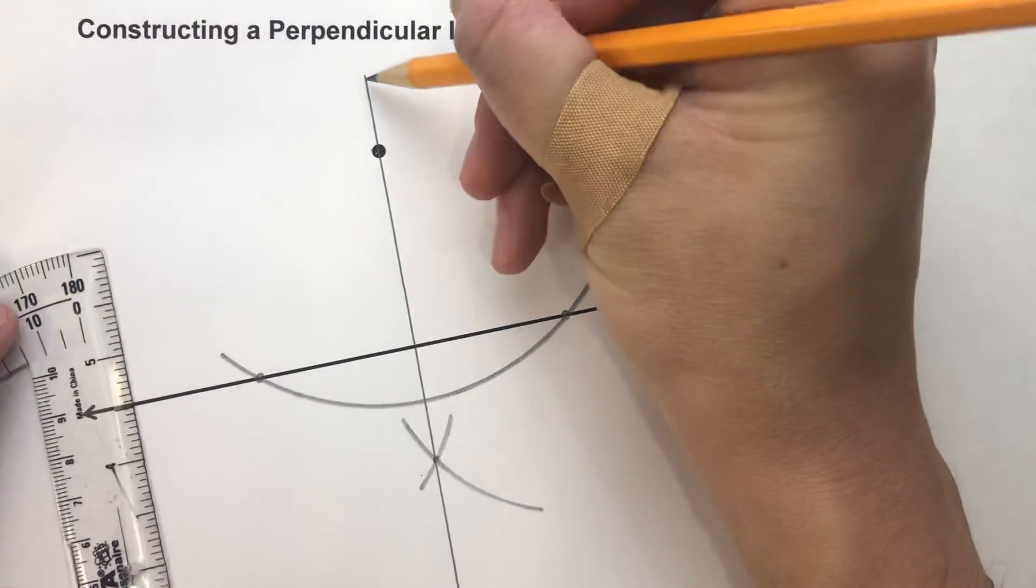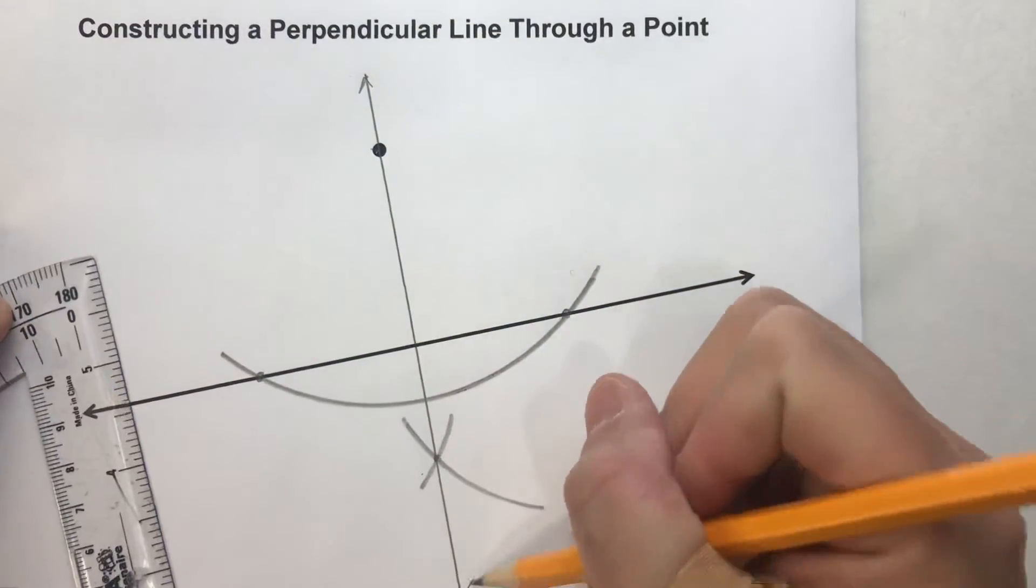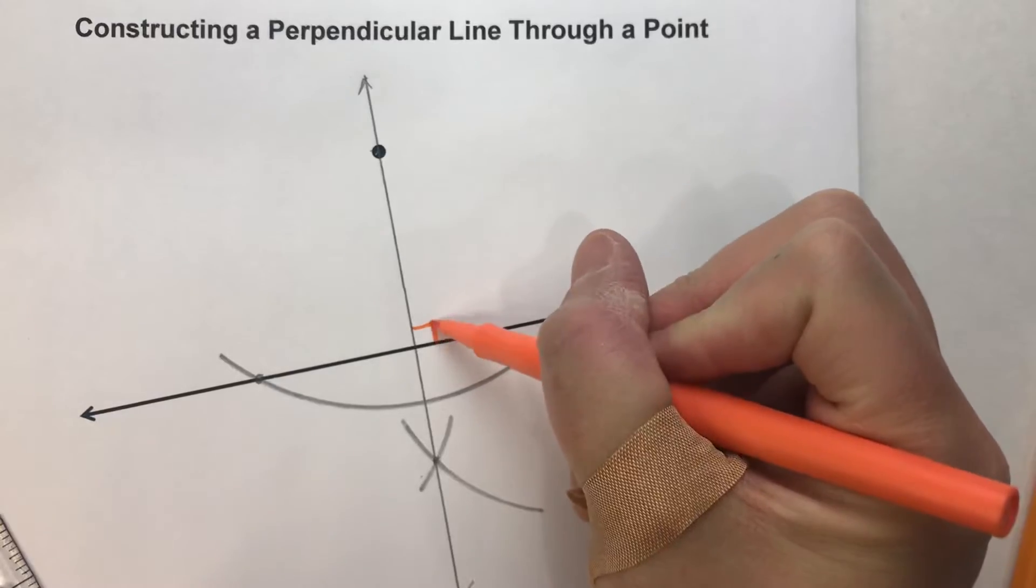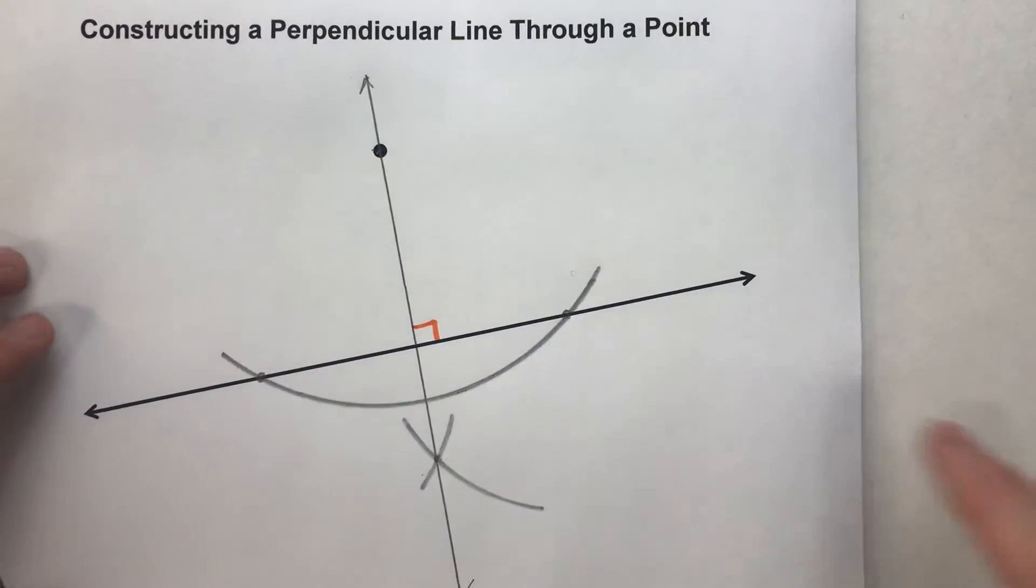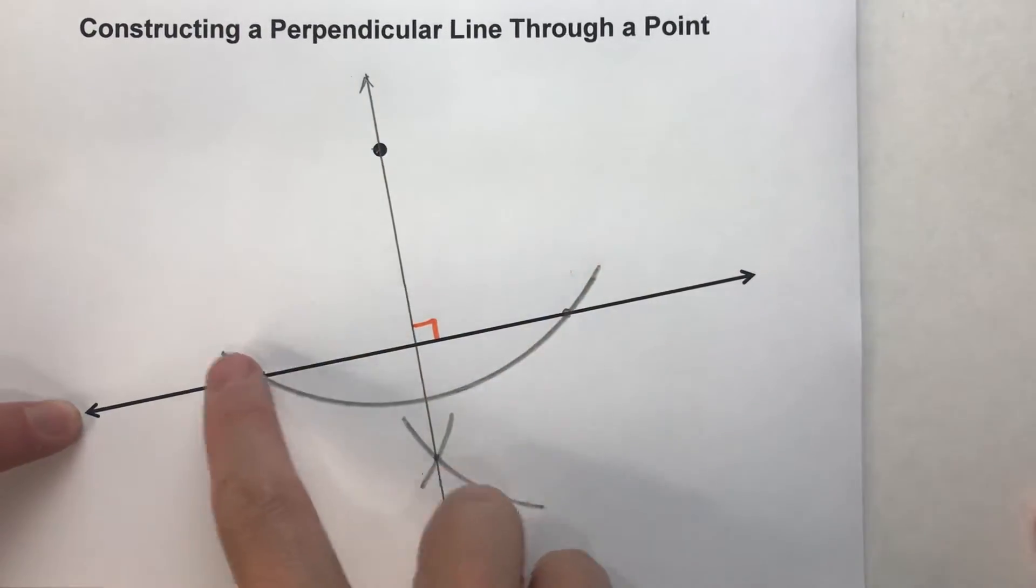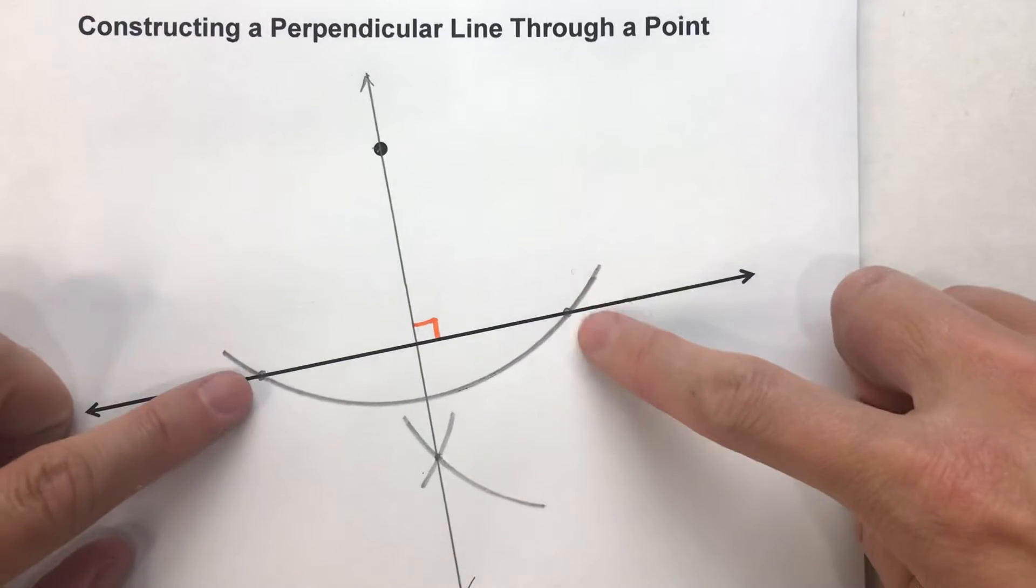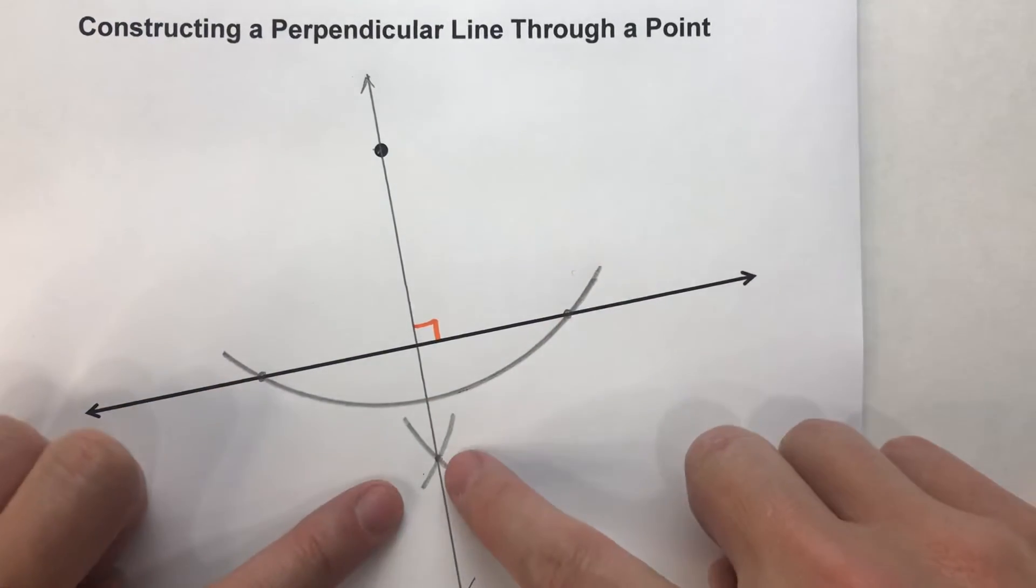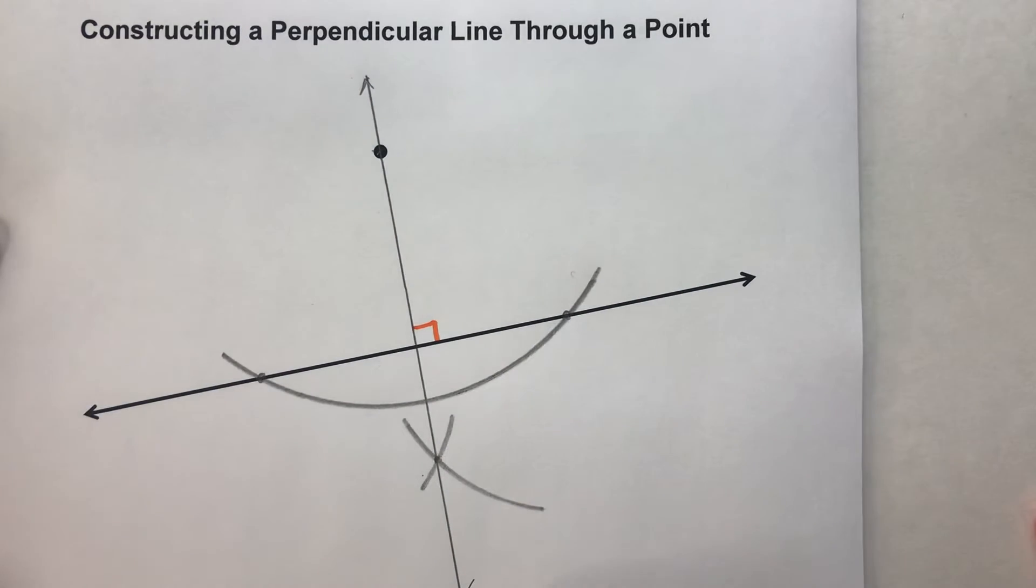So I can draw my line now. There you go. I'll put arrows on the ends and I'll mark it as perpendicular. And there is my perpendicular line through that point. So basically what we're doing is we're swinging an arc from that point and then using where the arc hits the line to find another point equidistant and then draw a line through it.